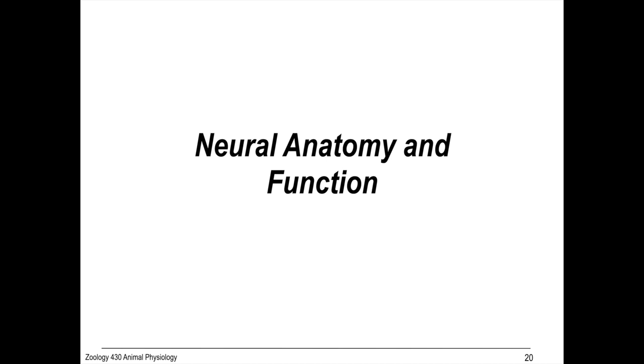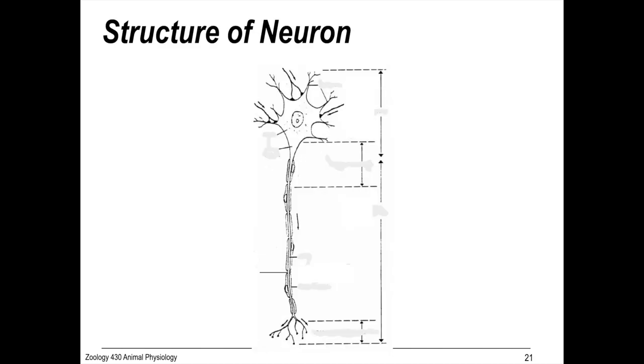Neural Anatomy and Function. Neurons have a soma, or cell body, with many dendrites that collect information. Impulses are transmitted down the axon, which is wrapped by a myelin sheath, separated by nodes of Ranvier.